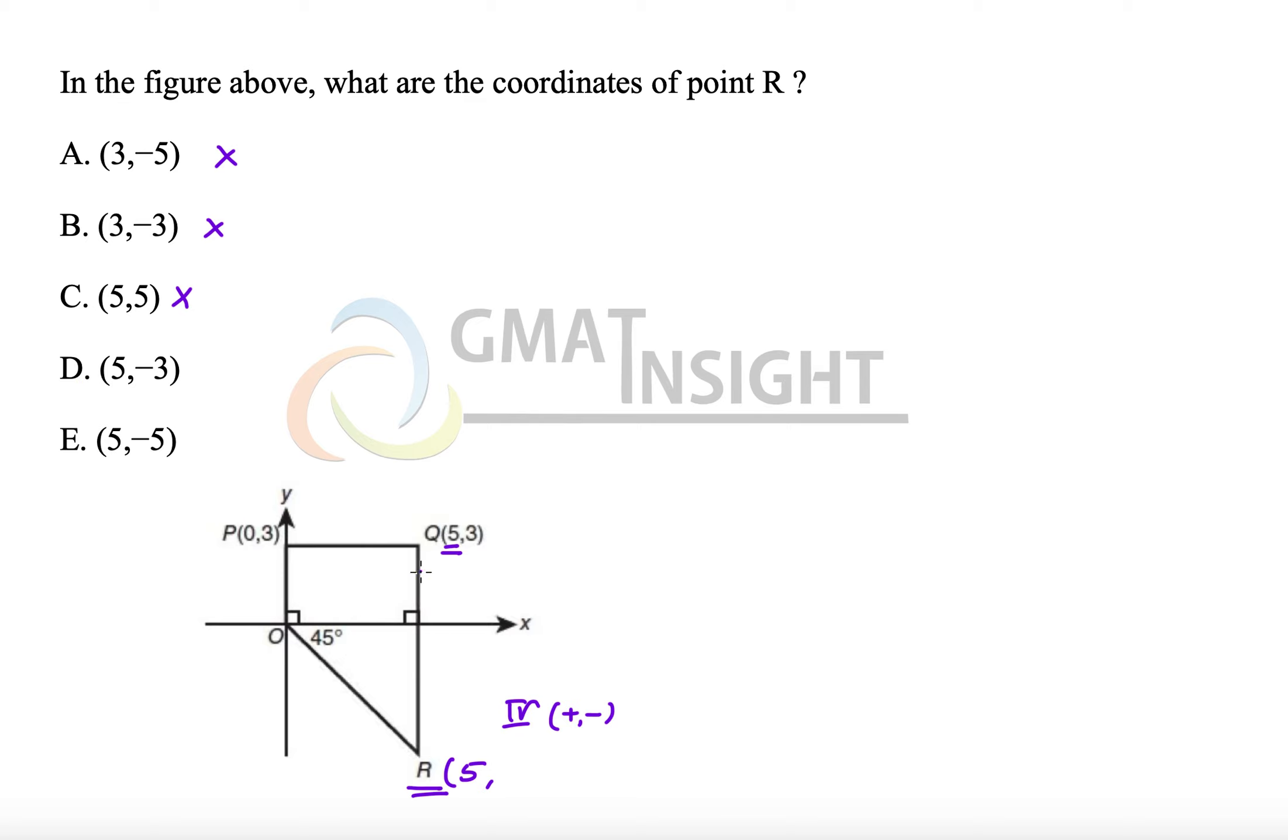Another thing because we understand that this distance is 3 but it has nothing to do with this distance. Now this angle is given 45 degrees.